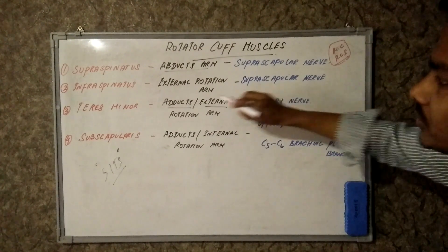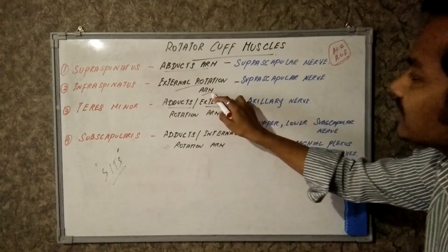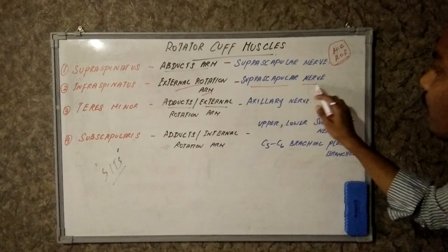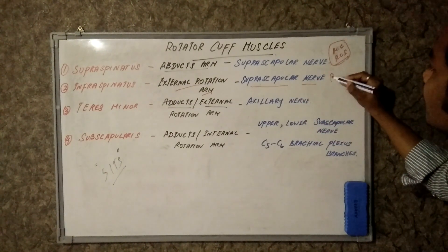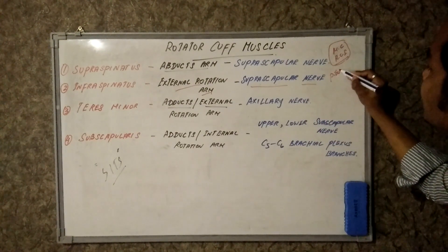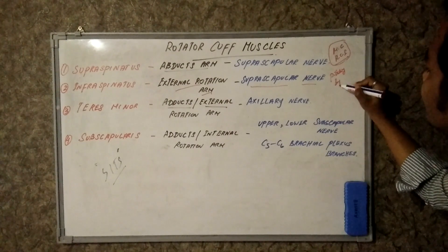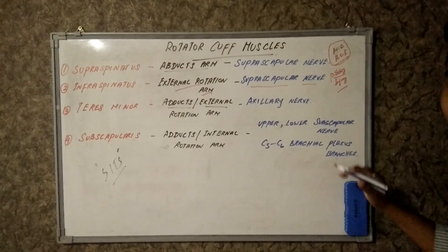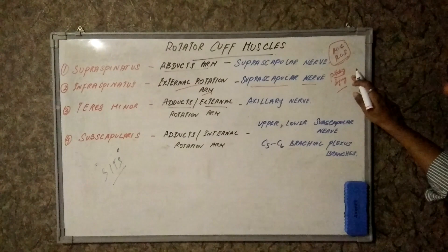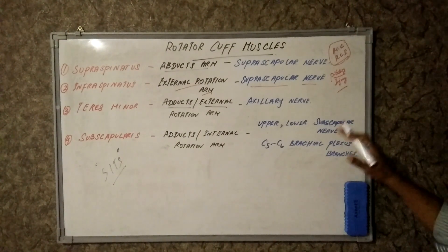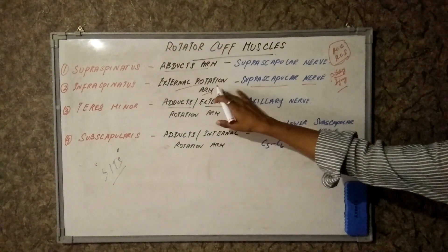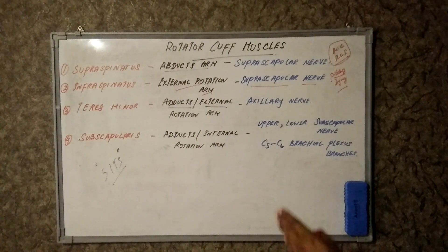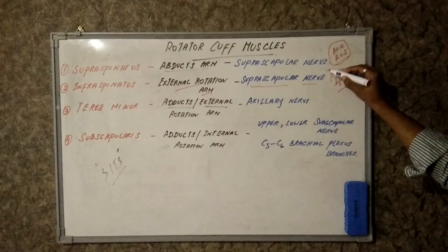The second muscle is infraspinatus, which is used to rotate the arm externally and is supplied by the suprascapular nerve. It causes pitching injury. Most of the time, baseball players and cricket bowlers will have pitching injury due to severe external rotation of the arm, which leads to damage to the infraspinatus muscle.